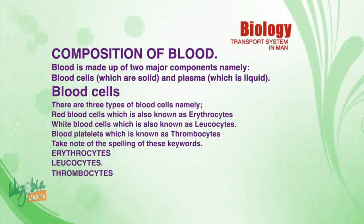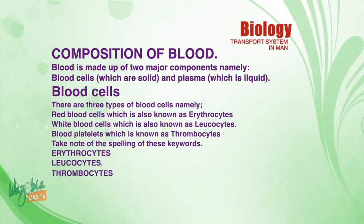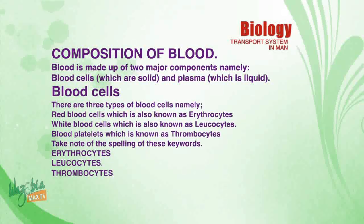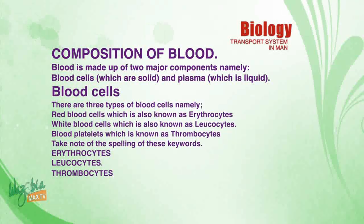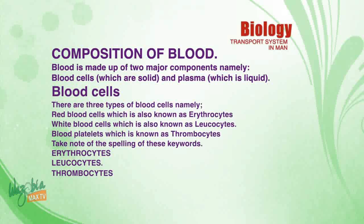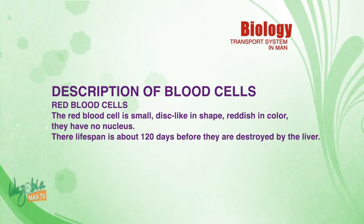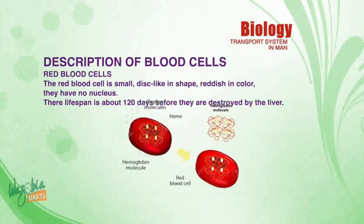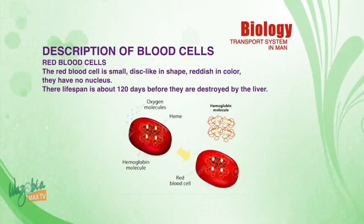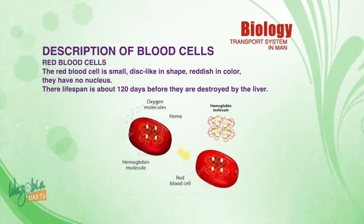The third type is blood platelets, known as thrombocytes. Take note of the spellings: erythrocytes, leukocytes — L-E-U-C-O-C-Y-T-E-S — and thrombocytes — T-H-R-O-M-B-O-C-Y-T-E-S. Description of blood cells: the red blood cell is small and disc-like in shape, reddish in color, and has no nucleus. Its lifespan is about 120 days before it is destroyed by the liver.